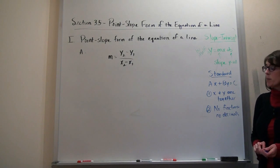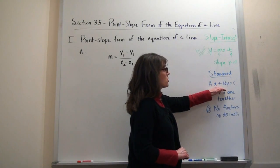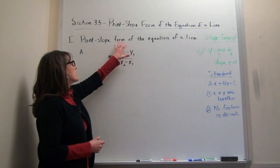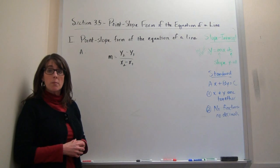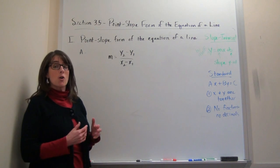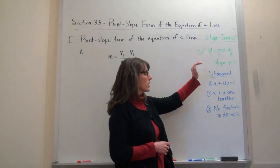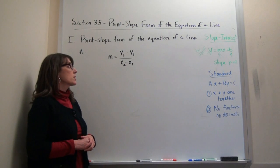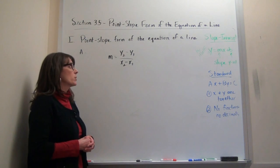Point-slope form is just another form for writing the equation of a line. Slope-intercept and standard form are different forms for writing the equation of the very same line, and the same thing can happen with point-slope form. I'm going to show you where point-slope form comes from because it makes it easier to remember and memorize. You're going to need to memorize all these different forms for the equation of a line.